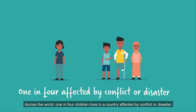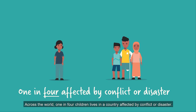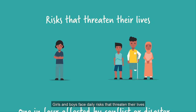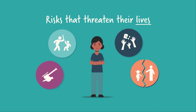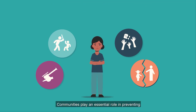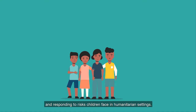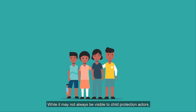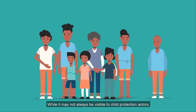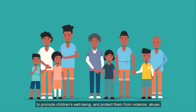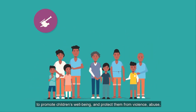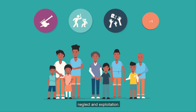Across the world, one in four children lives in a country affected by conflict or disaster. Girls and boys face daily risks that threaten their lives and their future physical and mental health. Communities play an essential role in preventing and responding to risks children face in humanitarian settings. While it may not always be visible to child protection actors, communities organize themselves in all sorts of ways to promote children's well-being and protect them from violence, abuse, neglect and exploitation.